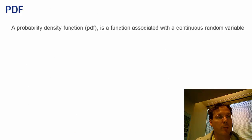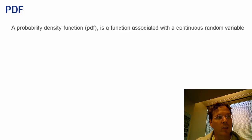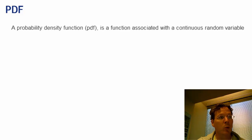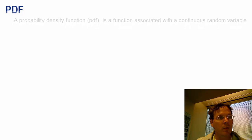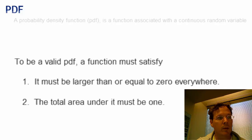In contrast to the probability mass function, which assigns probabilities to specific values for discrete random variables, is the probability density function, which is associated with continuous random variables. Just like a probability mass function has specific rules it has to follow, a probability density function has specific rules too. To be a valid probability density function, a function must satisfy being larger than or equal to 0 everywhere, and the total area under it must be 1.